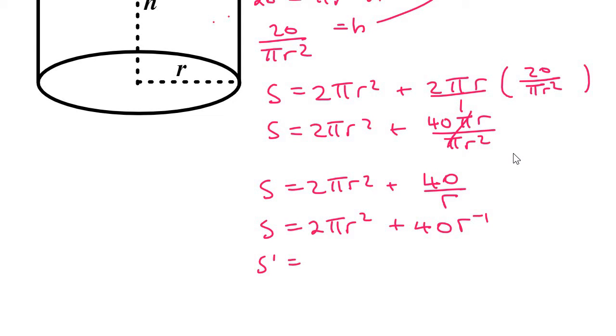So if you're a bit uncomfortable with pi, you just go and type that on the calculator multiplied by 2. It'll give you 4 pi R. And then this minus 1 would multiply to the front. So it'll become minus 40 R to the negative 2.